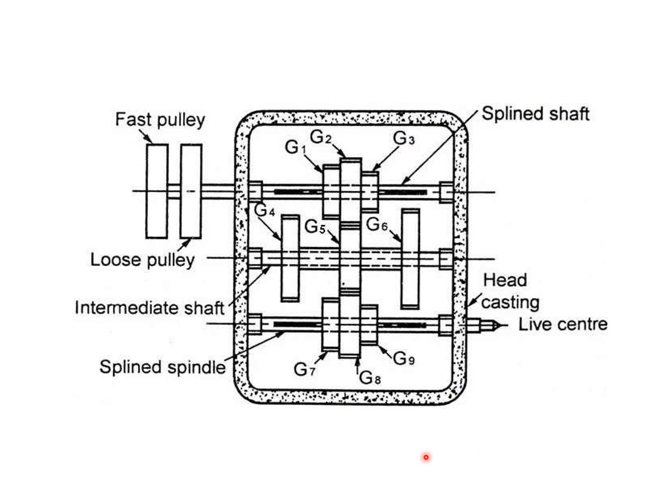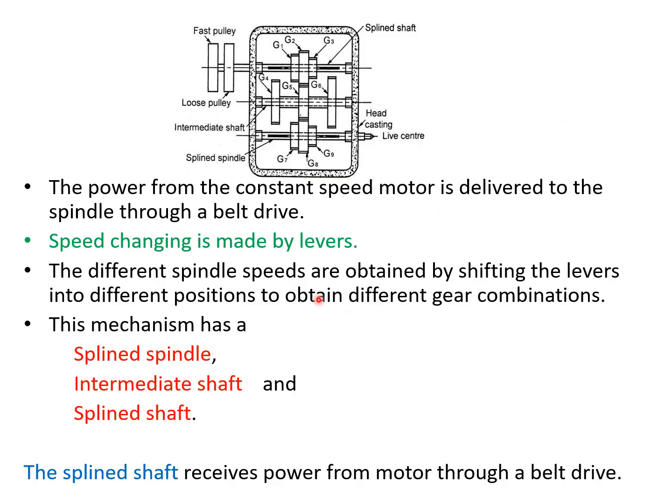This picture shows the model of the all-geared headstock mechanism. The power from the constant speed motor is delivered to the spindle through a belt drive. Speed change is made by shifting these levers.